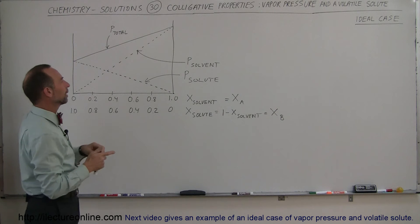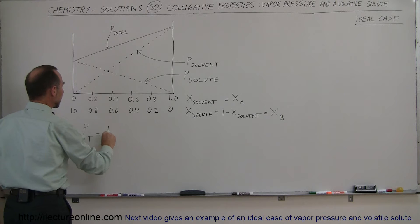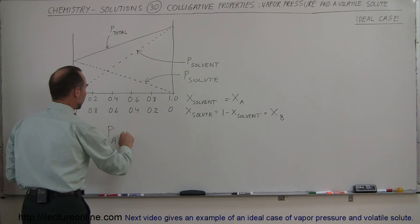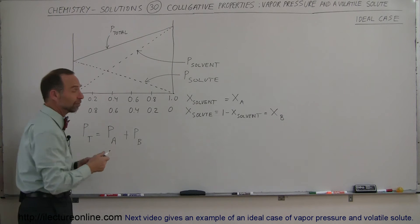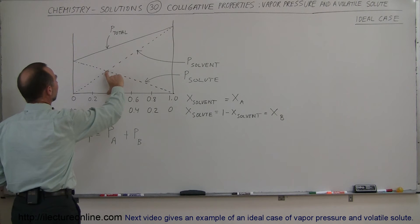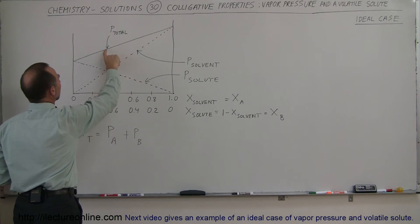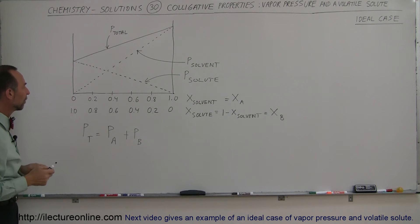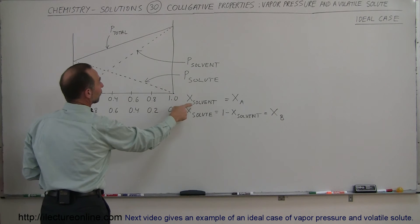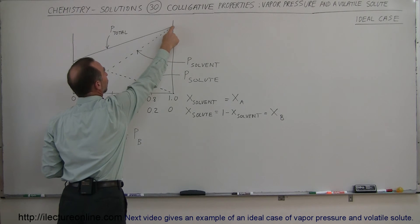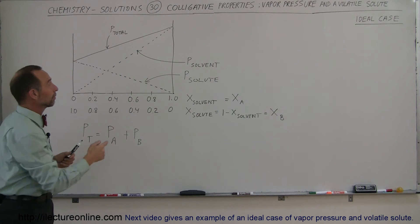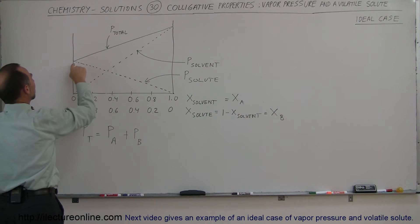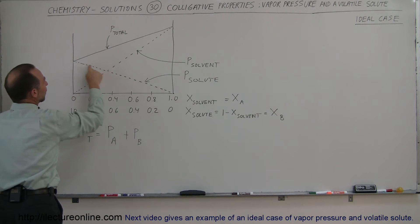So how do we find the total pressure? The total pressure is simply the pressure caused by the solvent — let's call that pressure A — plus the pressure of the solute, which we'll call pressure B. It's simply a sum of the two. You can see that if this is the pressure of the solvent at a given concentration, and this is the pressure of the solute at that concentration, added together they give the total pressure. Notice that if the solvent is 100% of the solution, the pressure equals the vapor pressure of the pure solvent. And if the solution is entirely solute, the vapor pressure is that of the pure solute.